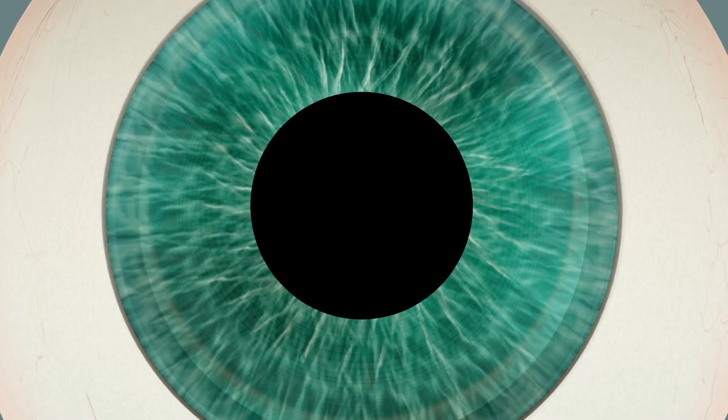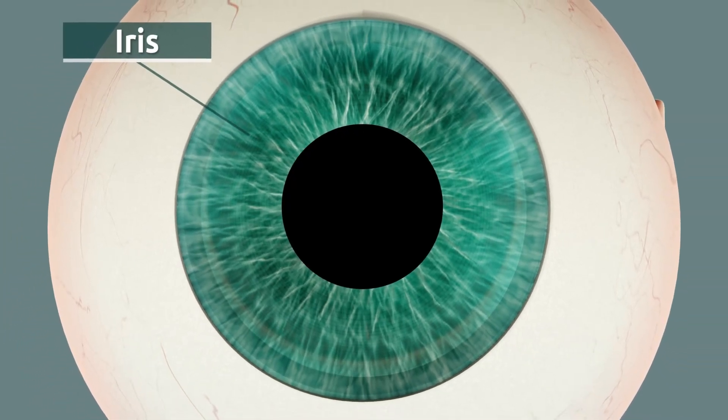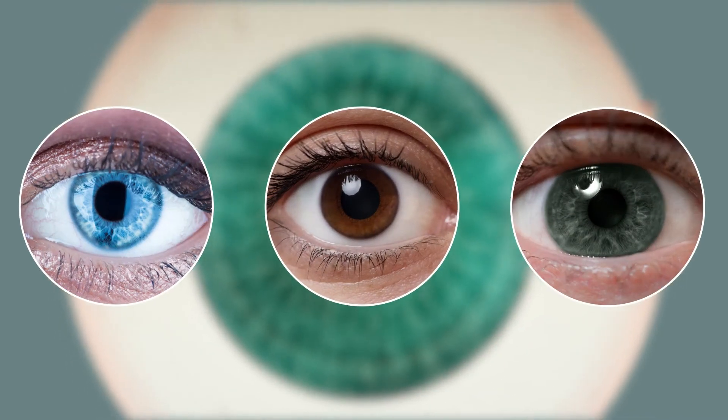The iris controls the amount of light that enters the pupil and it is also the part of the eye that has color. That's why we say that some people have blue eyes while others have brown or green eyes. Did you know that eye color is an inherited trait?